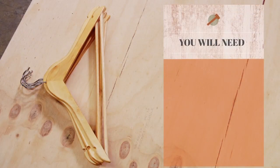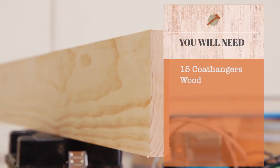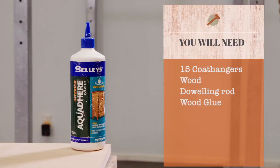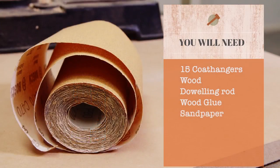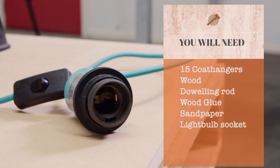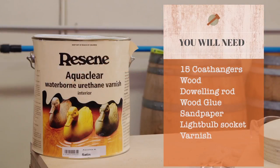Anei ngā rauemi: 15 coat hangers, wood for the center disc which matches the coat hangers, dowling rod, kāpia rākau, wood glue, hoanga, sandpaper, white bulb socket with a cord attached and varnish.